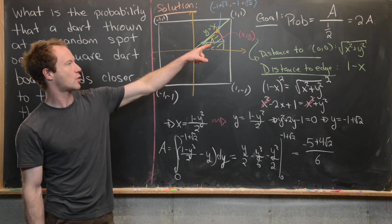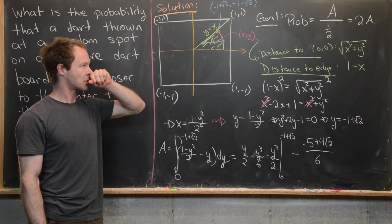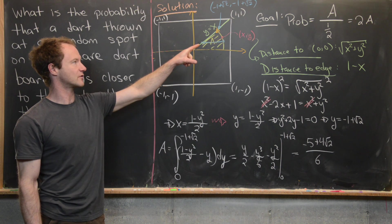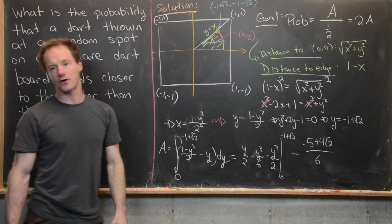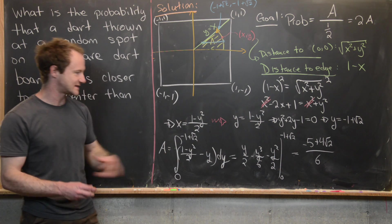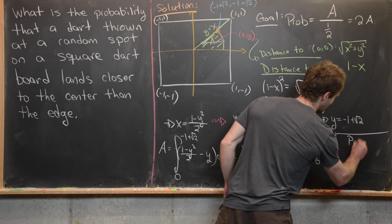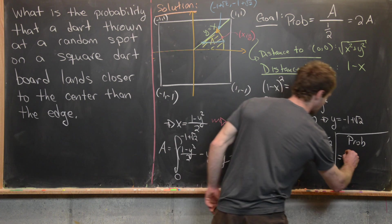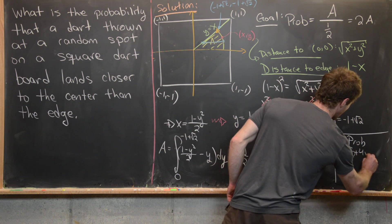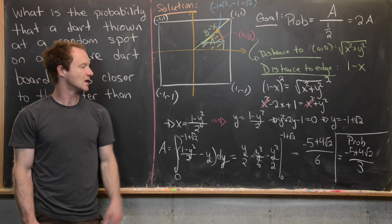But we don't want the area of this region. We want twice the area of this region because we earlier argued that our probability would be that area of the region divided by the area of the whole triangle, which was a half, which means our probability is twice the area of this region, which tells us that our probability is equal to (-5 + 4√2) / 3, because that's what we get if we double that.